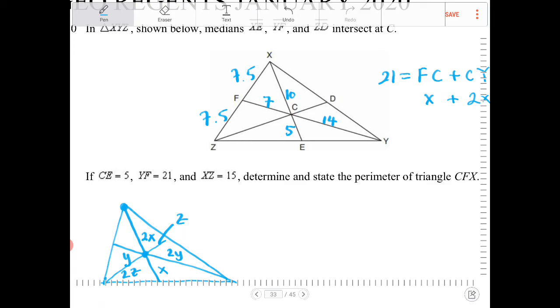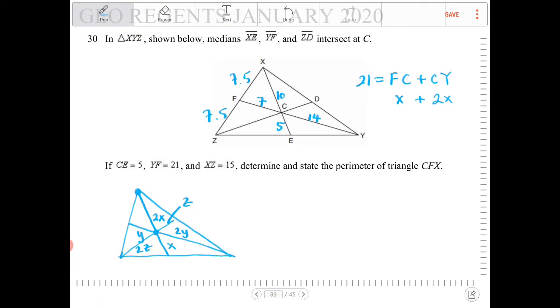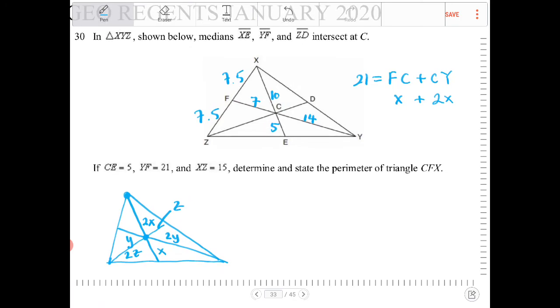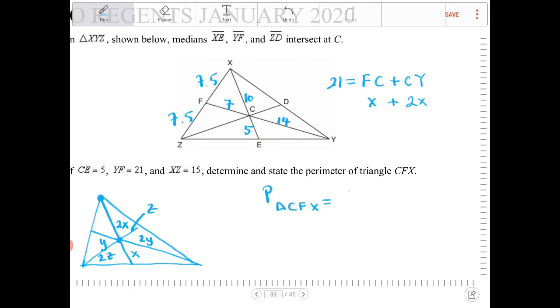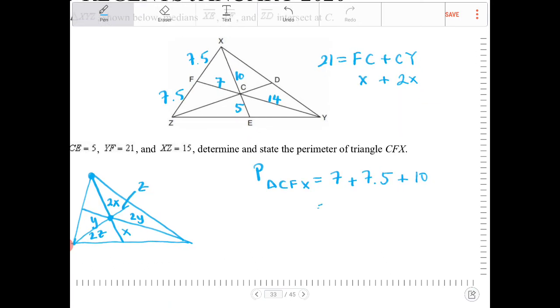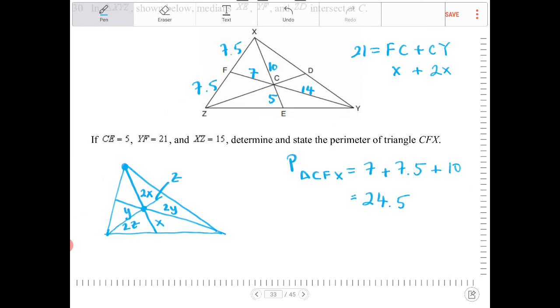The question is asking for what now? The perimeter of CFX. So the perimeter of triangle CFX, therefore, is equal to 7 plus 7.5 plus 10. That would be 14.5 plus 10. That would be 24.5. And they didn't give us any units or anything, so that's the final answer there.